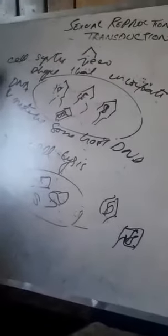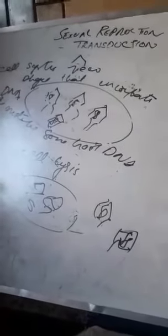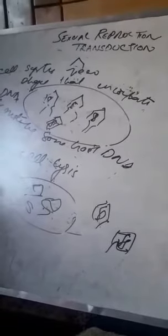Then transductant phage attacks another bacterial cell and injects the donor's DNA, and ultimately the donor DNA is incorporated. Ultimately the cell has so many phages that the cell lyses and the phages are released. Thank you.